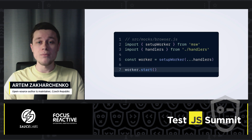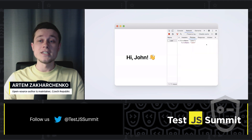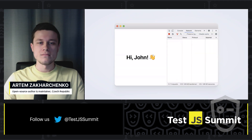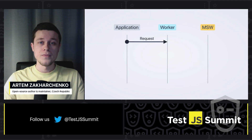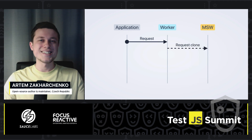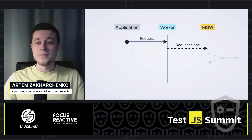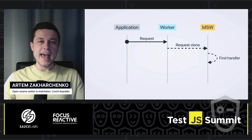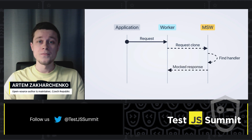I import this module in my app and I can see that now when I make a request to /user, it gets intercepted and I receive the mock response. But how exactly does it work? Whenever the app makes a request, it gets intercepted by the worker. The worker clones the request and sends it back to MSW — because MSW doesn't execute on the worker. Instead, it runs next to your client code, so you can use your favorite languages, libraries, and utilities there. MSW tries to find the handler for this request. When it does, it returns the mock response to the worker, and the worker uses it to respond to the original request in the client.